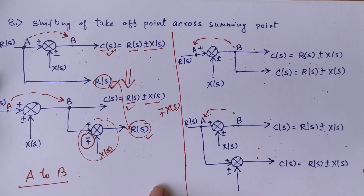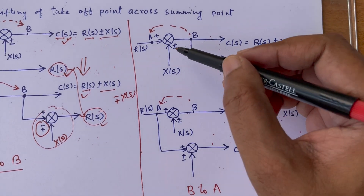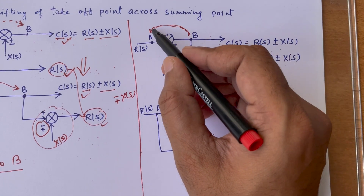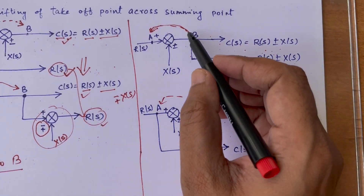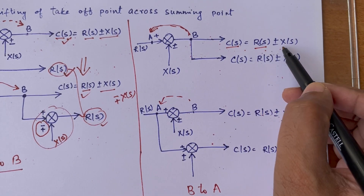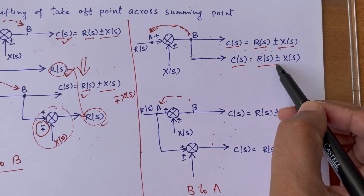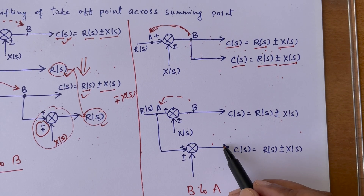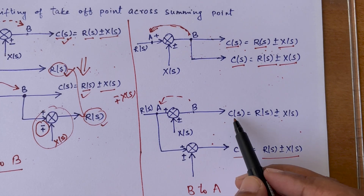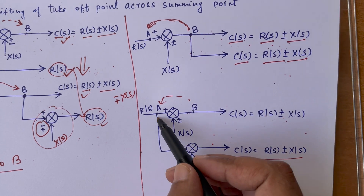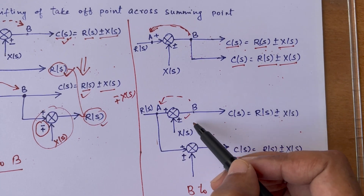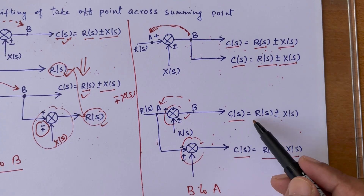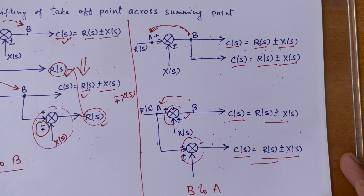Similarly, when shifting a takeoff point from right to left across a summing point, the same rule applies in reverse: the takeoff point moves left and a corresponding block is added so the output value remains the same, R(s) ± X(s), matching the original configuration.